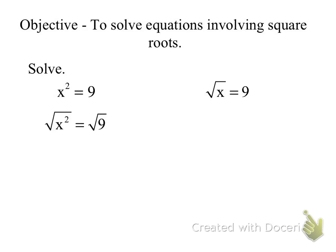All I'm going to do is use my inverse operations. What's the opposite of squaring? Taking the square root. So I'm going to take the square root of both sides. What do we get when we take the square root of x²? The absolute value of x. I have to take the absolute value of x.